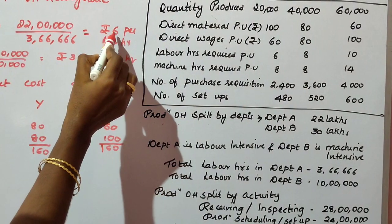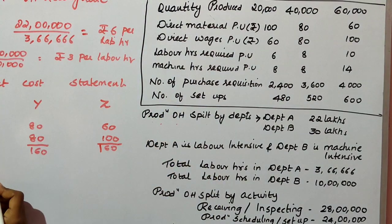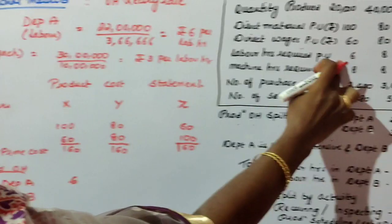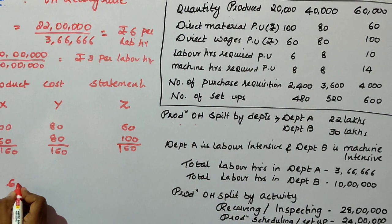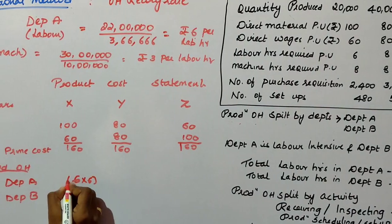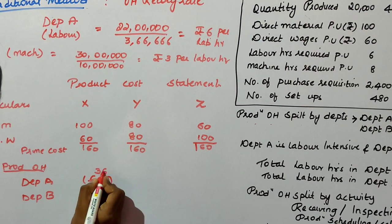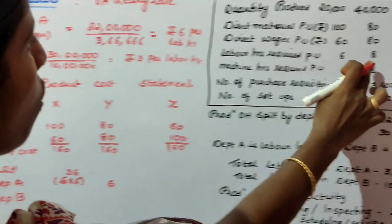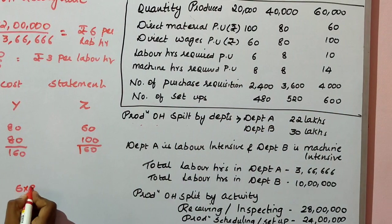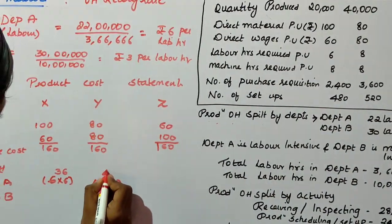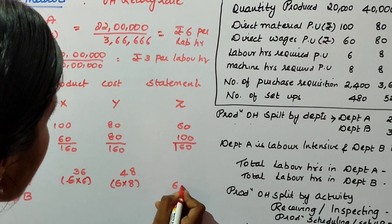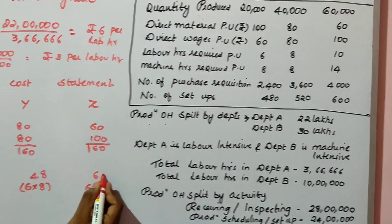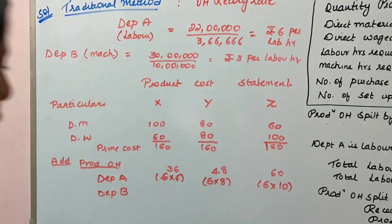Department A is labor intensive, so we take the labor rate of ₹6. For product X: 6 into 5 labor hours = ₹30. For product Y: 6 into 8 = ₹48. For product Z: 6 into 10 = ₹60.